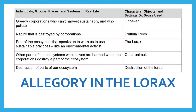On the right-hand side of the chart, we have the characters, objects, and settings Dr. Seuss used to represent these things in real life. Those greedy corporations are represented by the Onceler, who greedily takes all the Truffula trees to create products. The nature destroyed are the Truffula trees. The environmental activist is the Lorax who speaks for the trees. Other animals in the Truffula forest get driven out, representing animals affected by deforestation. The destruction of the Truffula forest represents the destruction of our ecosystem.